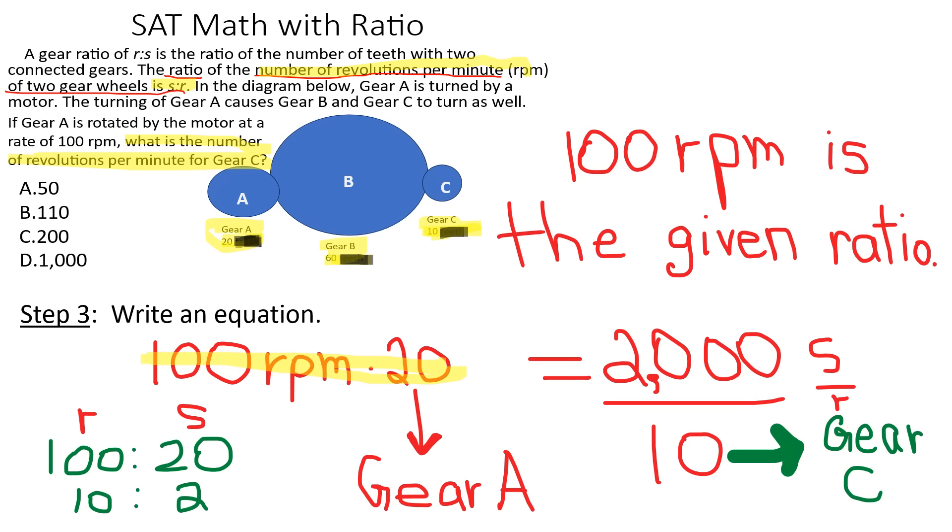When they ask you what is the number of revolutions per minute for gear C, you already have your original revolutions because you had gear A. You know that if they say if gear A is rotated, and they don't just throw this number 100 RPM for nothing. 100 RPM was put there for a reason. So 100 RPM has to be used, and we use it here, 100 RPM times our first gear of 20, which gave us 2,000.